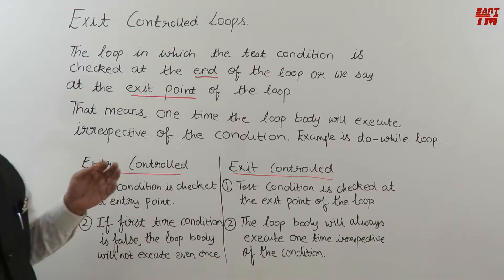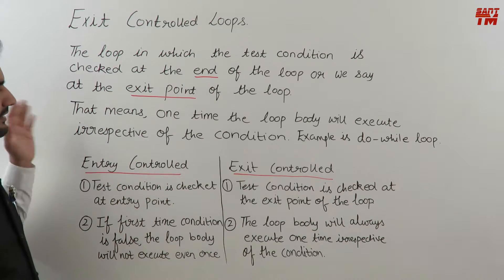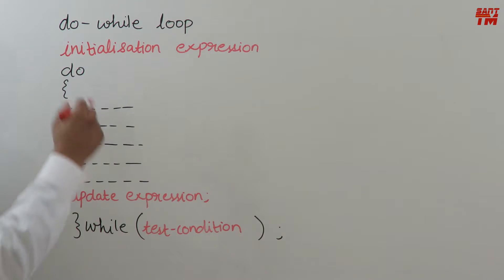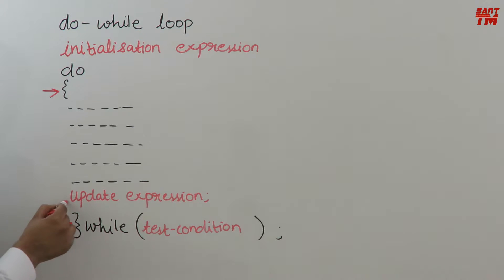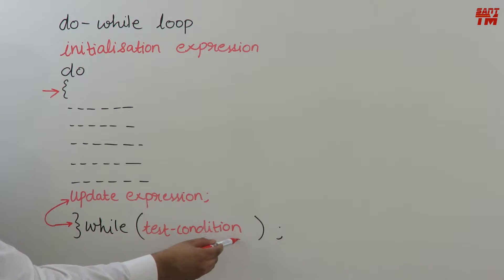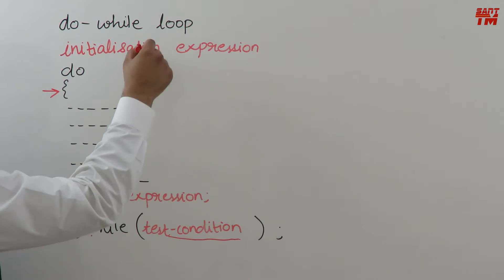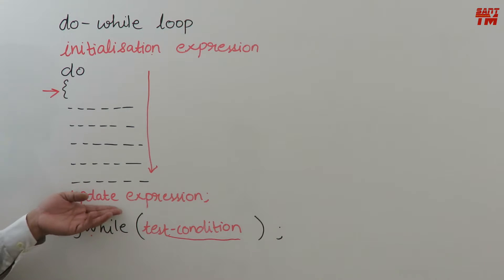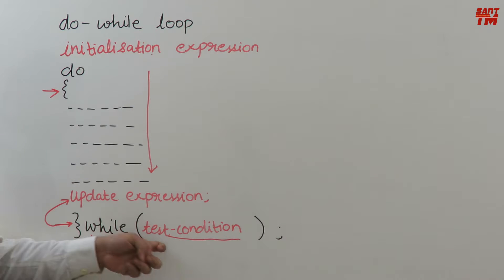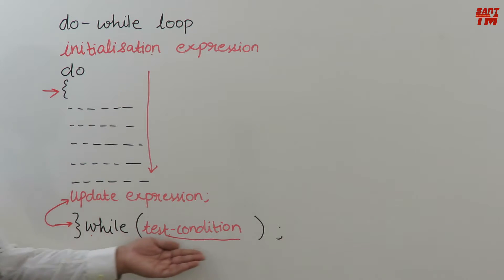We will see the example of the do-while loop. First let's study the syntax. Here comes the initialization expression, then the keyword 'do', then the loop body starts and ends with braces. The update expression is placed just before the closing brace, like in while, and the test condition comes after the 'while' keyword. So the order is: initialization, do keyword, loop body, update expression, while keyword, test condition. First initialization runs, then the body executes, then update expression, then the test condition is checked — that's why it is called exit controlled.